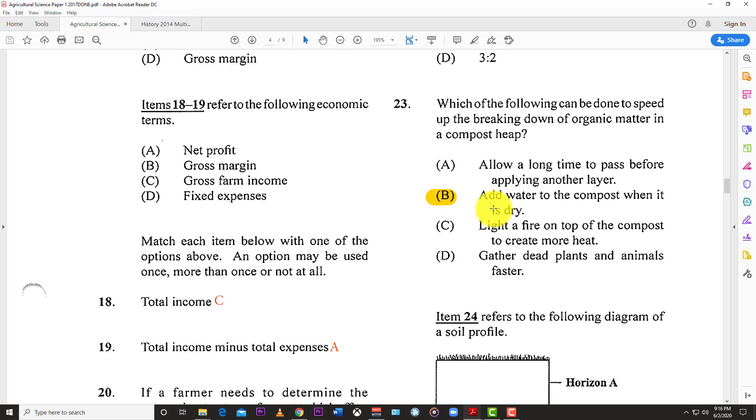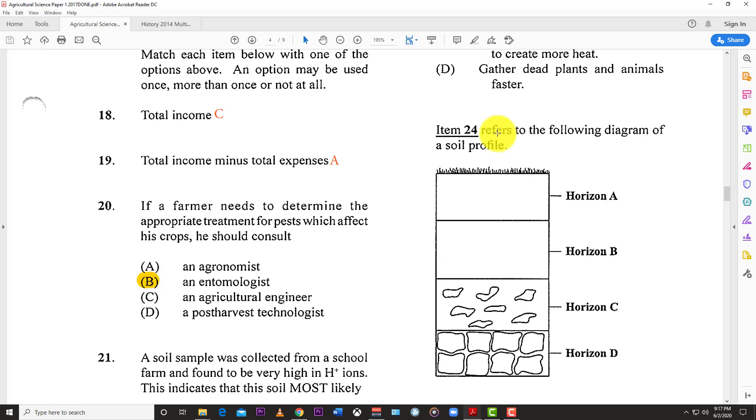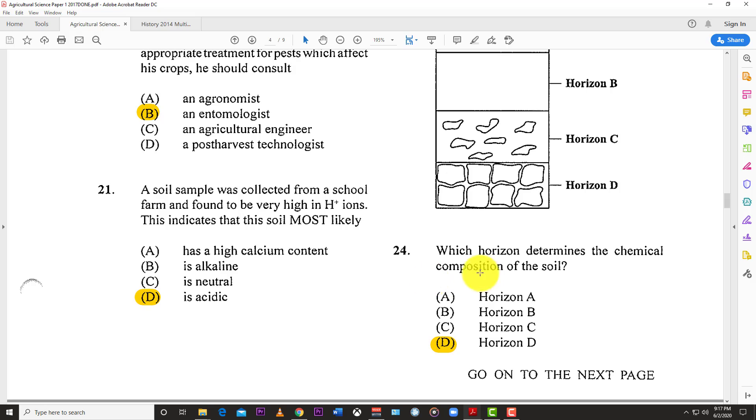Number twenty-three: Which of the following can be done to speed up the breaking down of organic matter in a compost heap? B, add water to compost when it is dry. You want moisture because moisture stimulates organisms and bacterial activity.